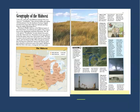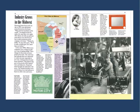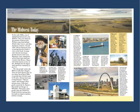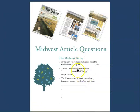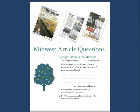One bingo option is to read the article called 'The Geography of the Midwest' and answer the questions on the third page of that PDF. Another option is the article 'Industry Grows in the Midwest,' where you read it and answer questions on the third page of that PDF. There's also 'The Midwest Today' article and a 'Transportation in the Midwest' article — we talked a little about transportation in this video — each with questions at the end of the PDF.